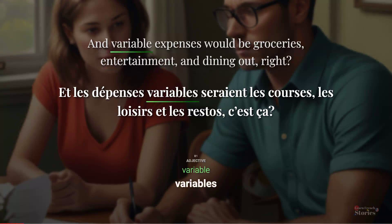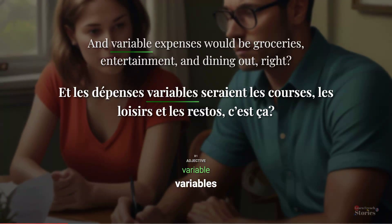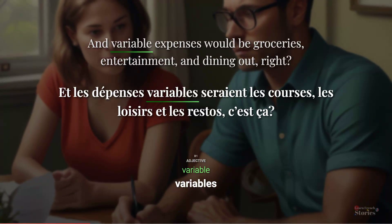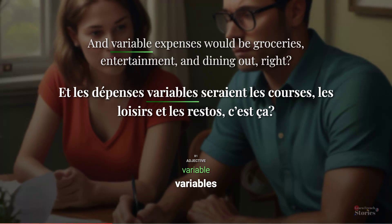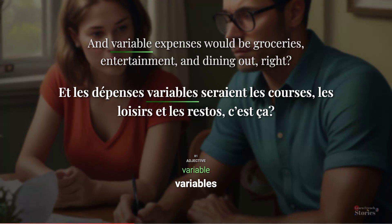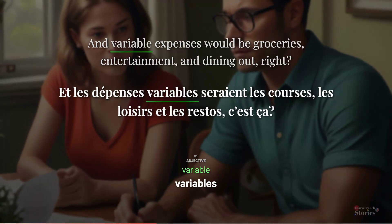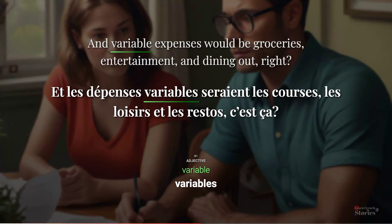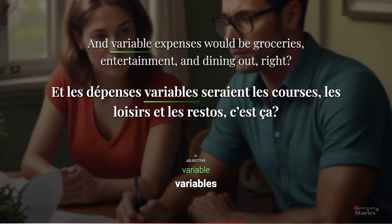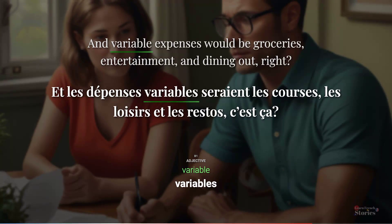And variable expenses would be groceries, entertainment and dining out, right? Et les dépenses variables seraient les courses, les loisirs et les restos, c'est ça.